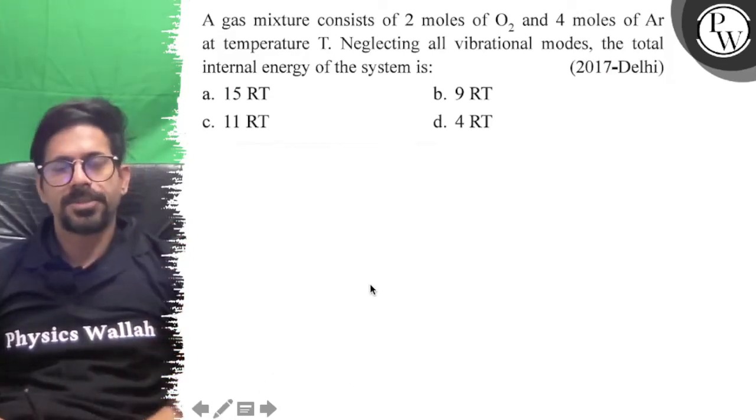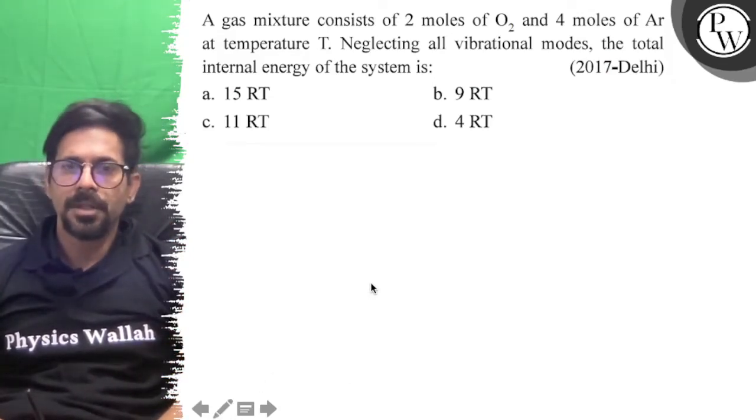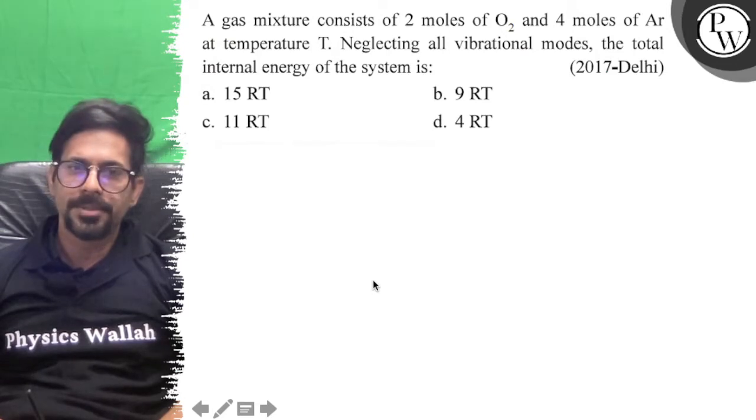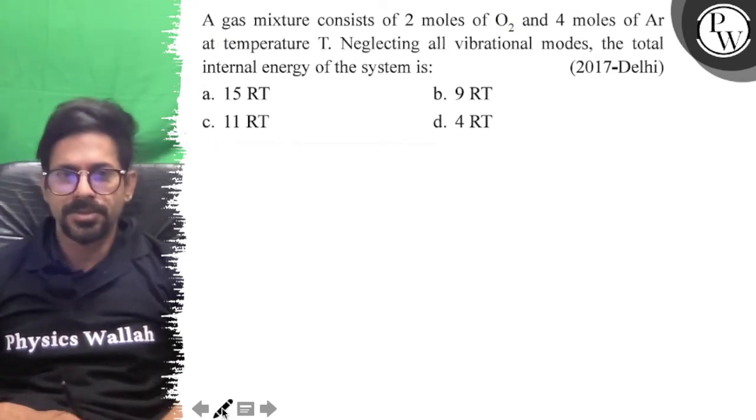Hello, let's see the question. A gas mixture consists of 2 moles of O₂ and 4 moles of Ar at temperature T. Neglecting all vibrational modes, find the total internal energy of the system.